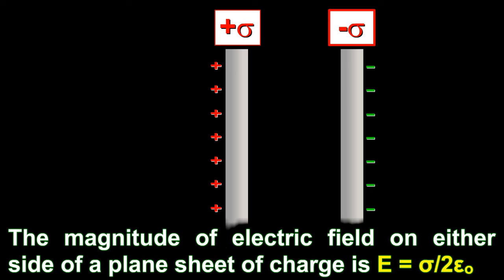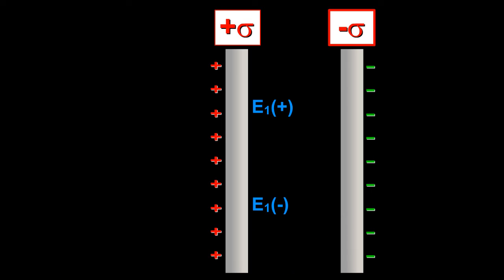It acts perpendicular to the sheet, directed outward if the charge is positive or inward if the charge is negative. When point P1 is in between the sheets, the field due to two sheets will be equal in magnitude and in the same direction.